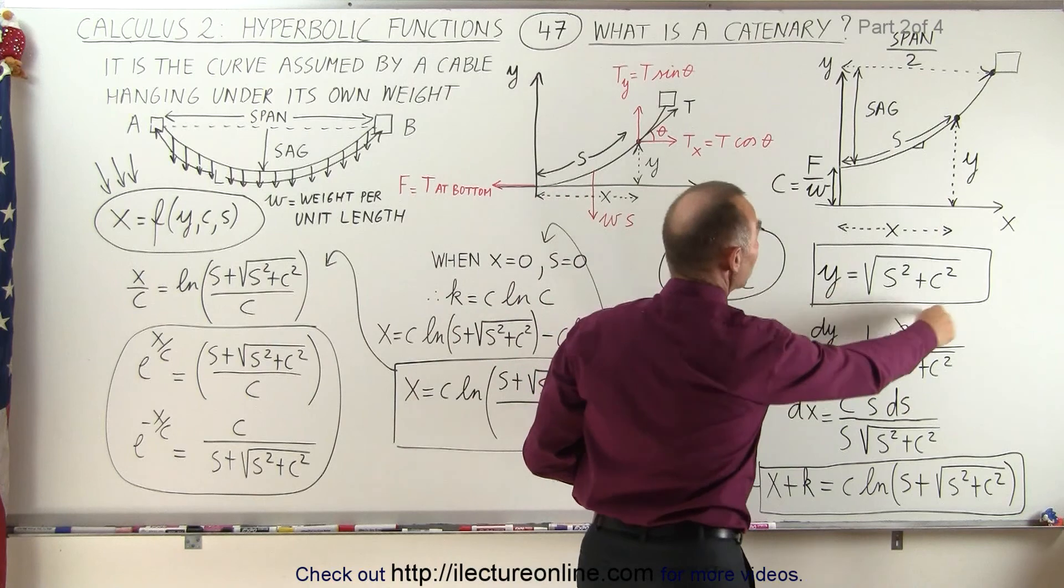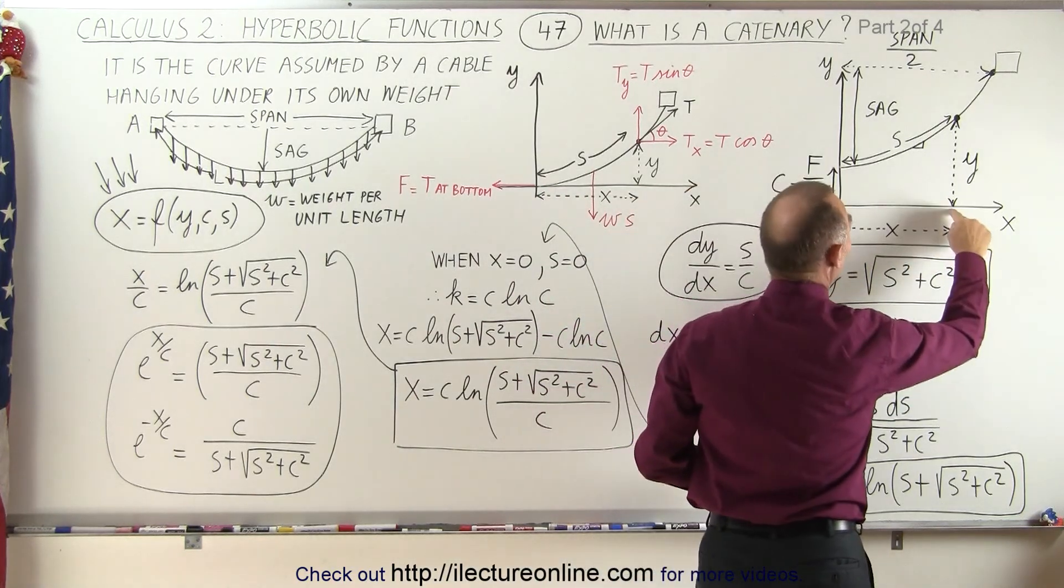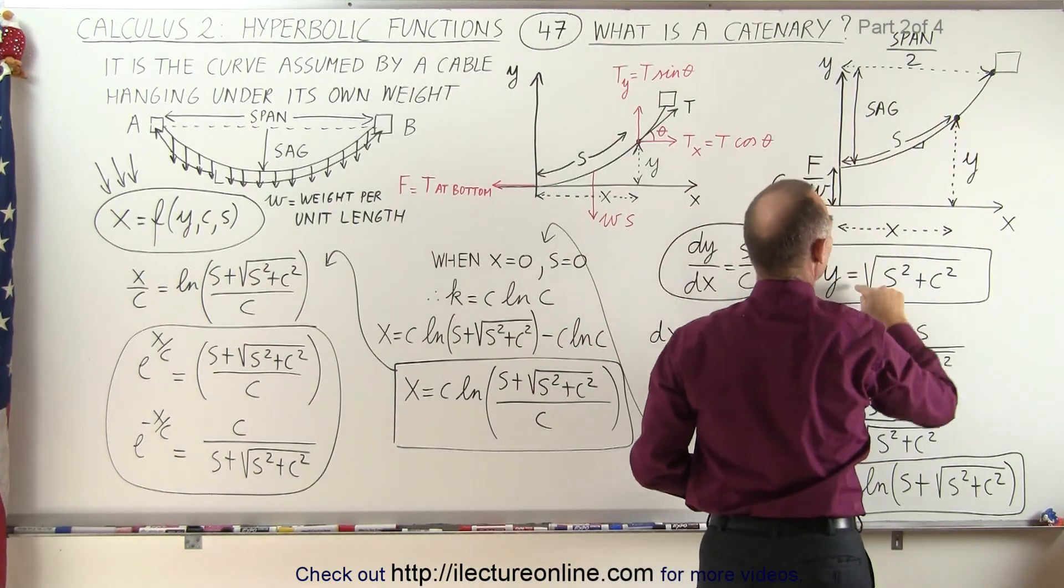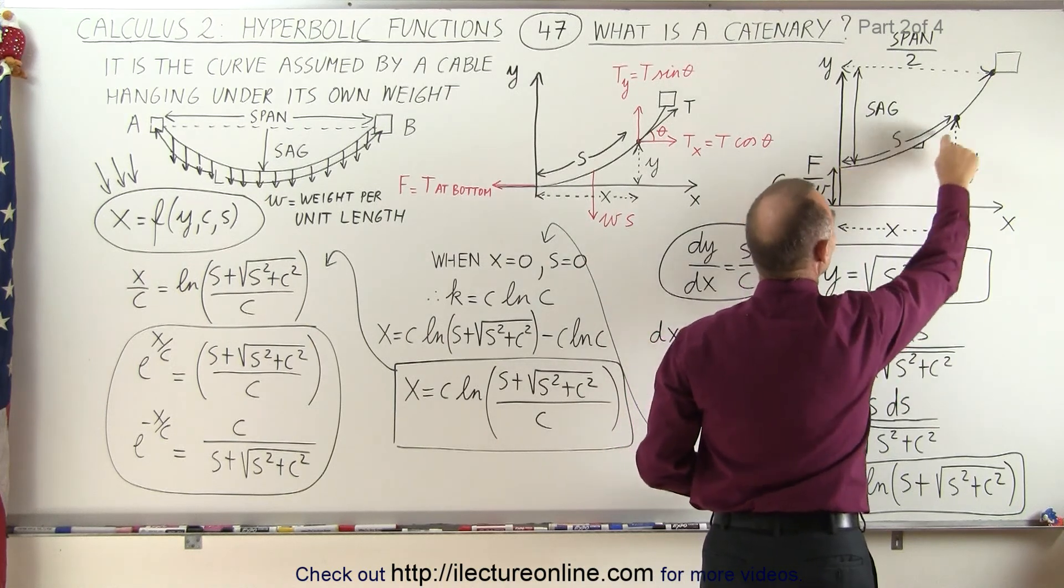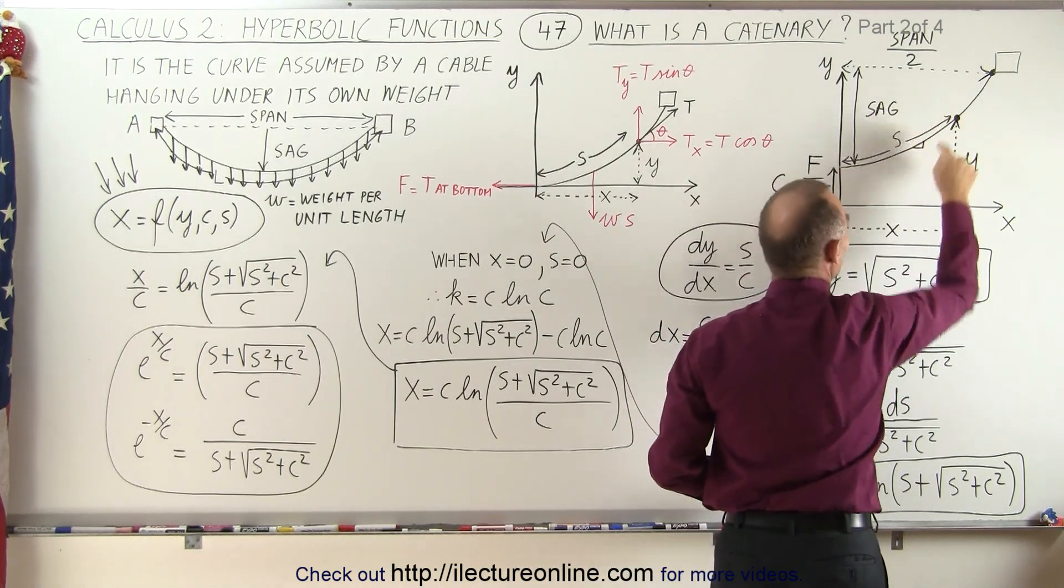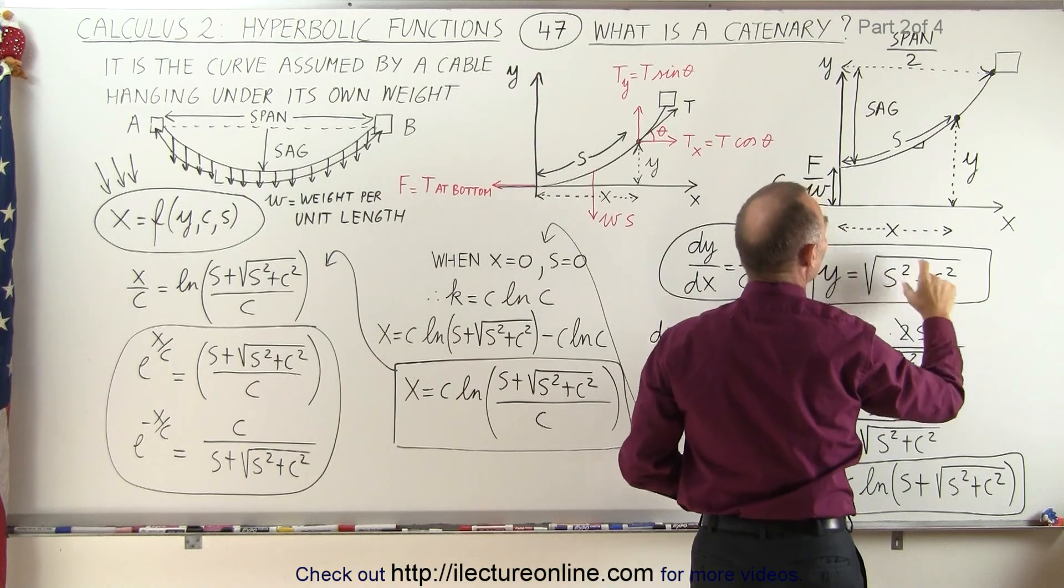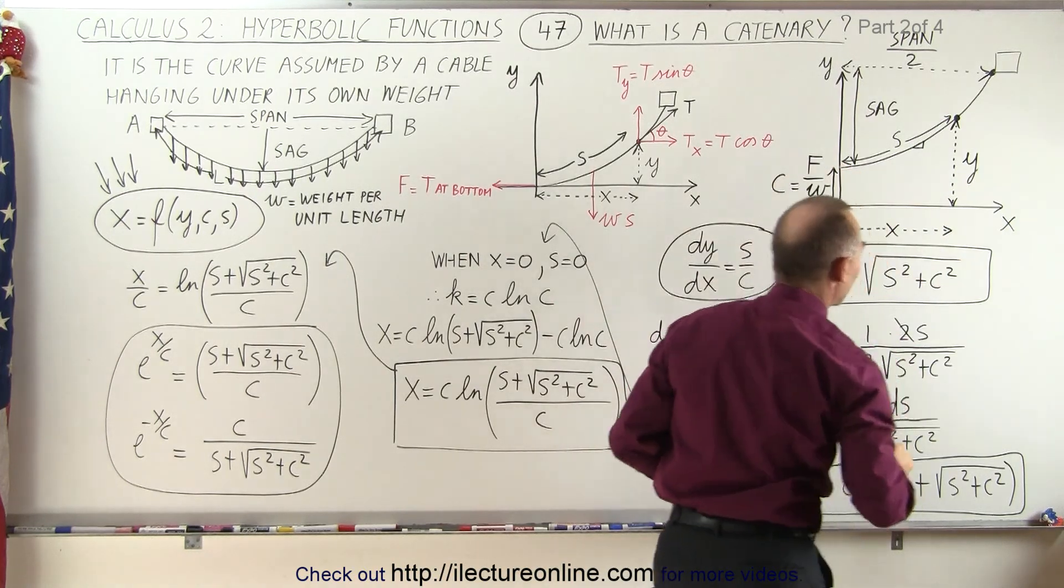In the previous video, we were able to come up with this equation here, where the distance y to any arbitrary point on the cable is equal to the square root of the length from the bottom of the cable to that point squared, we call that s, plus this distance quantity squared as well.